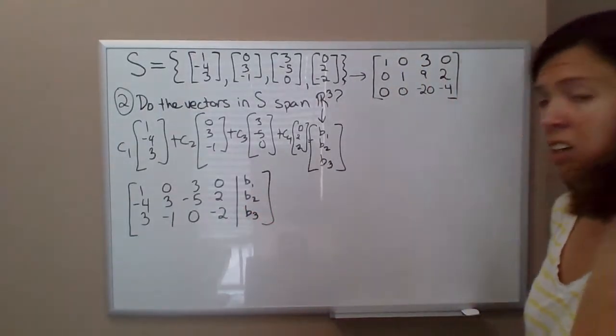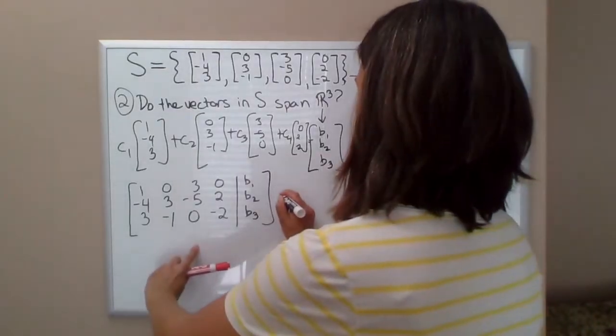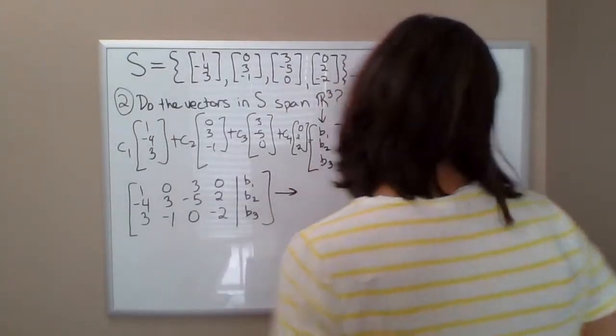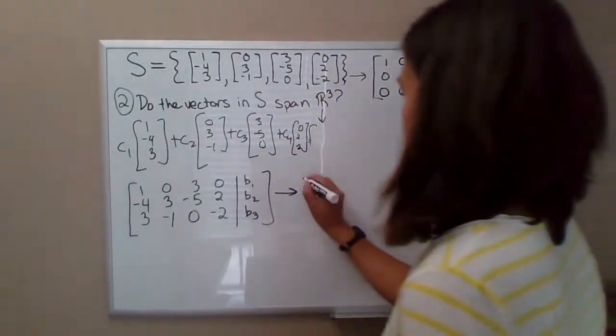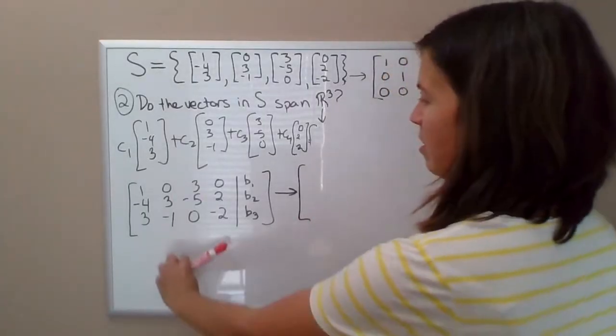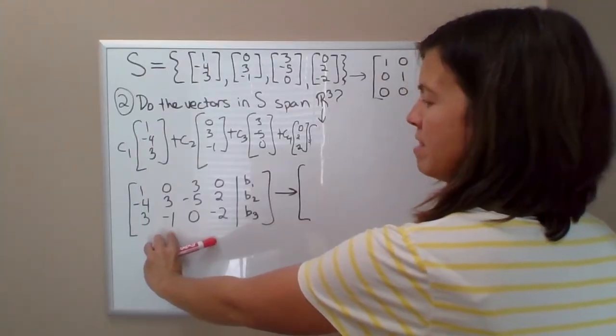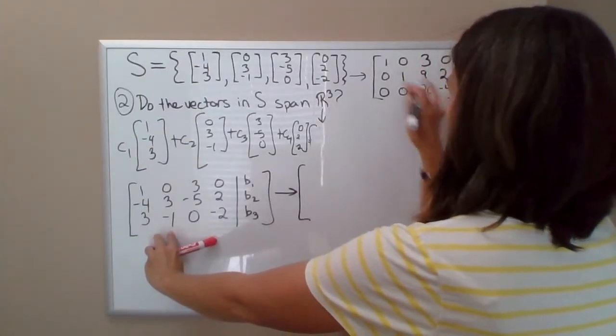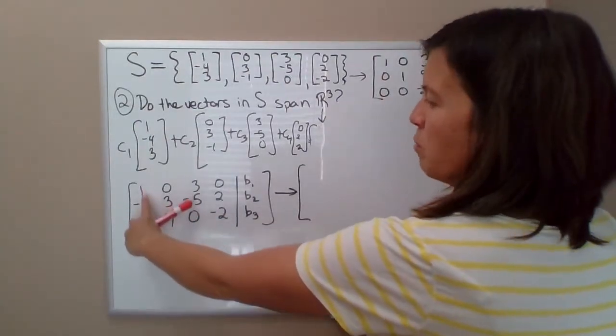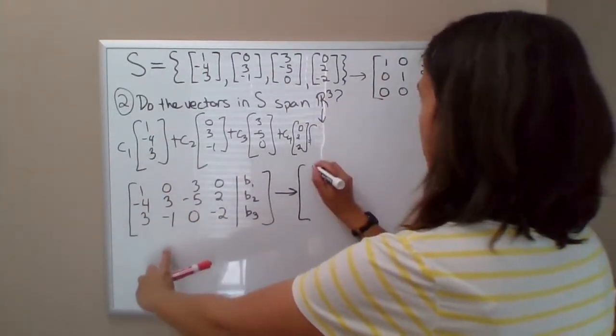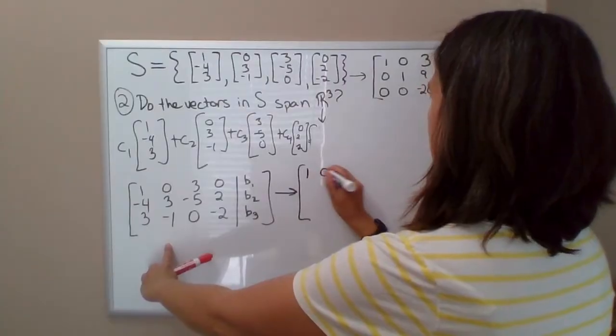And then we row reduce it to see what the solution set looks like. My B1, B2, B3 are getting in my way. Then the row reduction would happen exactly the same way on the left side here, so it would reduce to what we got in that last example video. So if you go through the steps for row 1 plus row 2 and so on, you're going to get this.